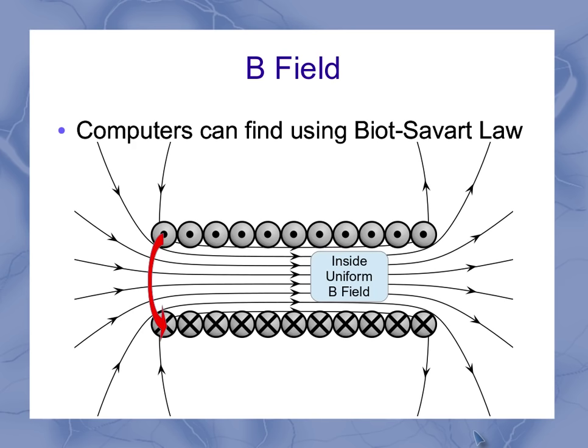One, inside the solenoid, the B field is pretty much uniform. So the lines are about equally spaced and they all point in the same direction. And the more ideal your solenoid is, the closer to uniform this is.